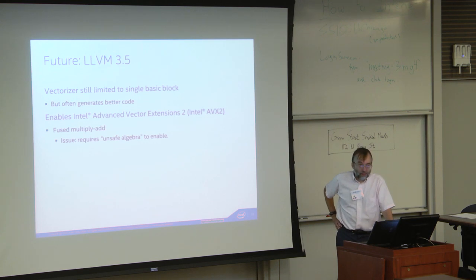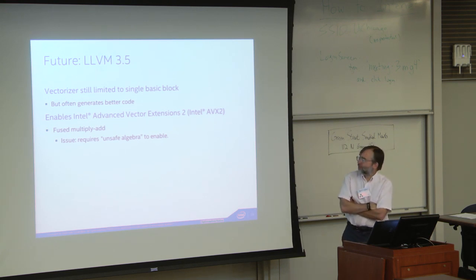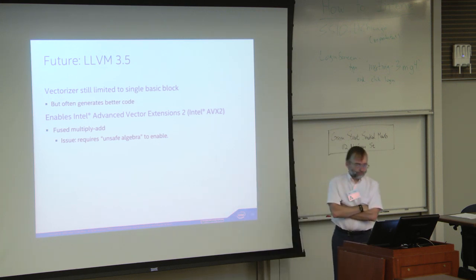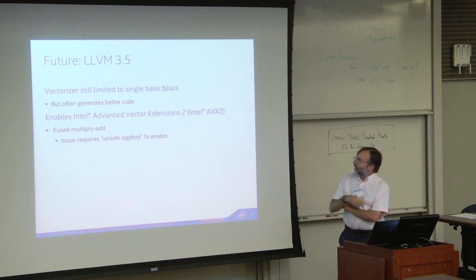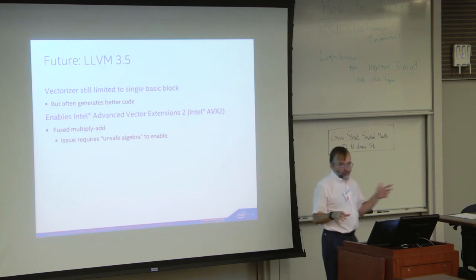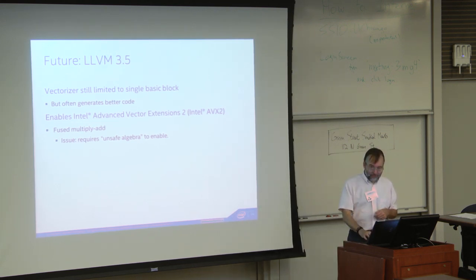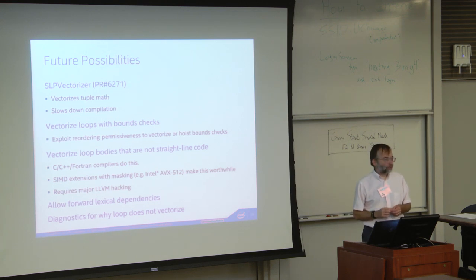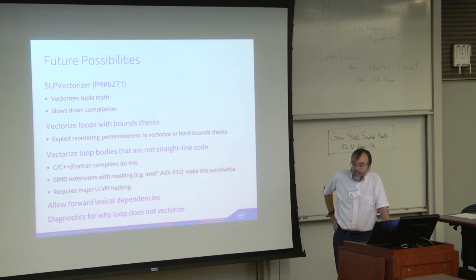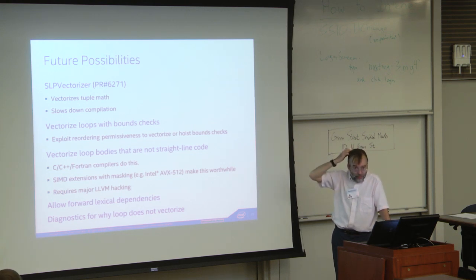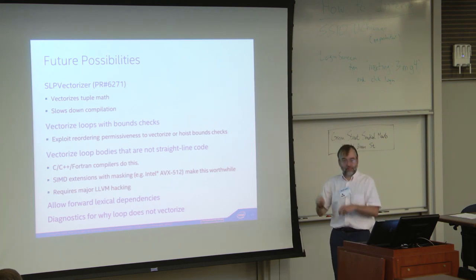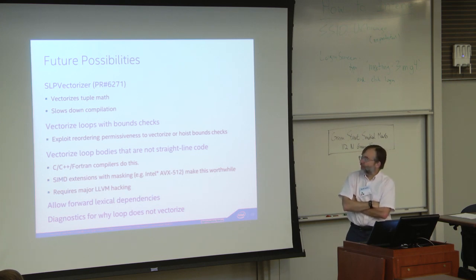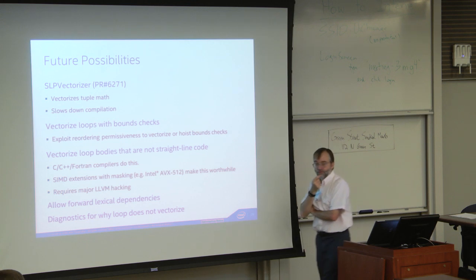For the future: LLVM 3.5 is still limited to vectorizing a single basic block, but it produces generally much better code. It recently broke for Julia though. There's also AVX2 support with fused multiply-add. There's a pull request for vectorization of basic blocks — where you have a bunch of scalar math you can pack into SIMD registers. The compilation time hit is not nearly as severe in LLVM 3.5, so it's worth another look.